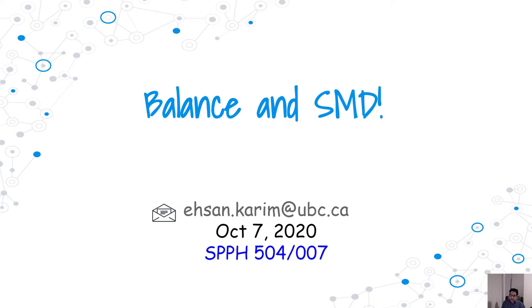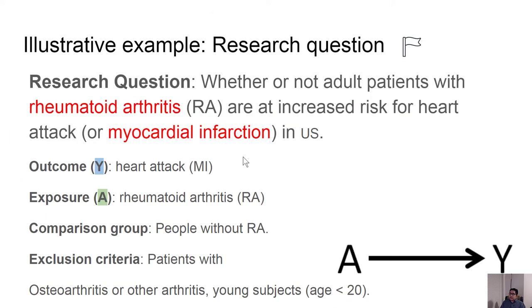In the observational data analysis context, I'm going to talk about balance and how to measure balance. Let me consider this research question: the outcome being heart attack, exposure being rheumatoid arthritis, and we are comparing with people who do not have rheumatoid arthritis.